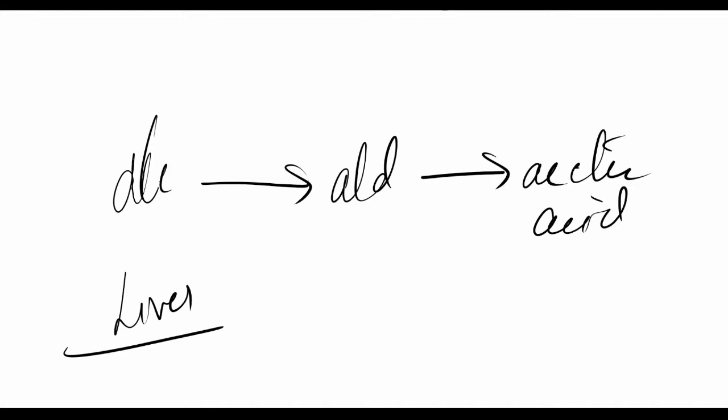Now the problem does not come when we are digesting the alcohol. The problem comes after the digestion when we reach the final step of acetic acid. So you can't keep an acid inside your body. No. You are supposed to get it out. You are supposed to get rid of it. So you have to excrete it.